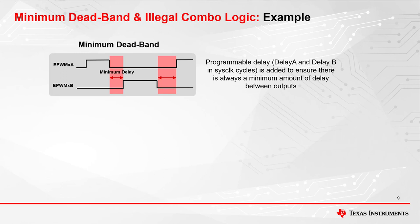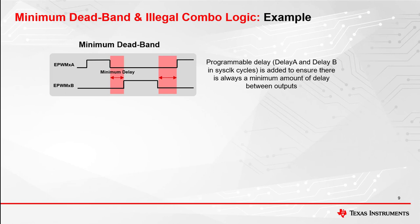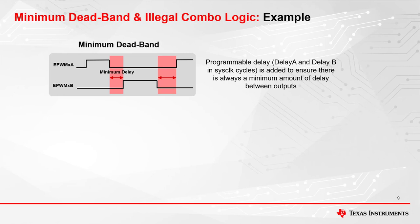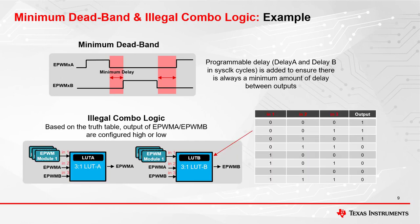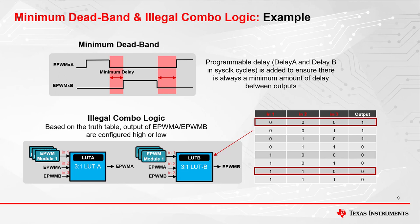Let's take a look at a simple example for the minimum deadband. When EPWM XA has a falling edge, there will be a delay occurring on the rising edge of EPWM XB. Likewise, when EPWM XB has a falling edge, there will be a delay on the rising edge of EPWM XA. For the illegal combo logic, each PWM will have one lookup table for A and one for B. This lookup table will take in a signal from another PWM module as an input. The lookup table allows you to determine an output based on the input combinations of N1, N2, and N3. For example, if N1, N2, and N3 are all low, we will output a 1. If N1 and N2 are high and N3 is low, we will output 0.